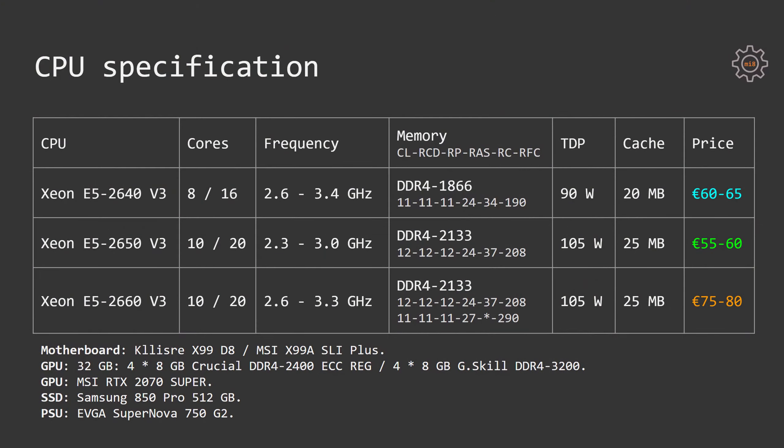Detailed timing configurations for each CPU test are shown on screen. In short, the E5 2640 used DDR4 1866 CL11, the 2650 used DDR4 2133 CL12, the 2660 on the Klycerer motherboard used DDR4 2133 CL12, and on the MSI X99A it used DDR4 2133 CL11.